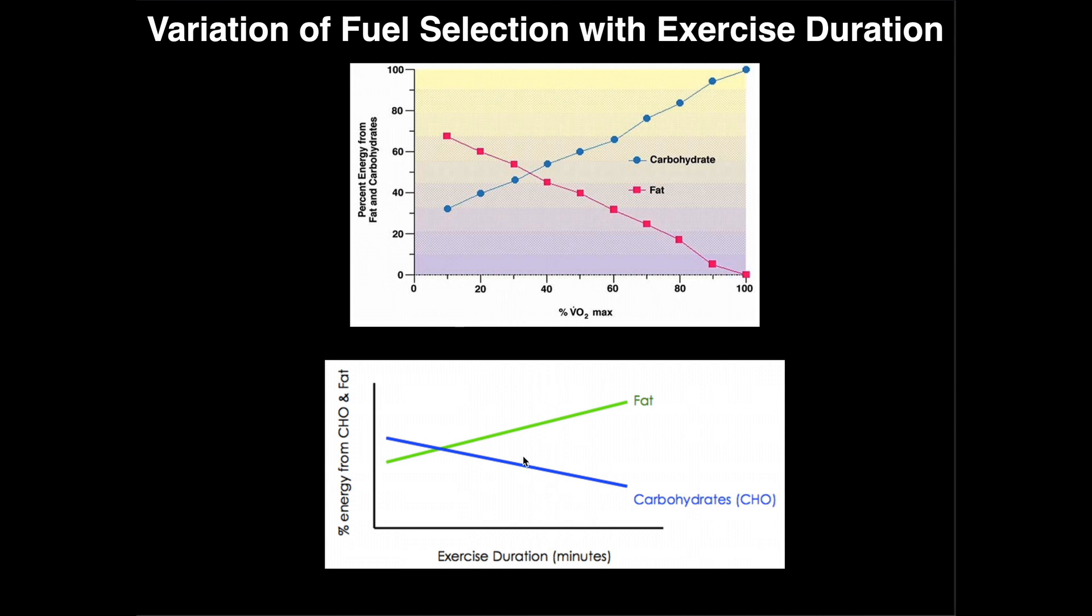When we look at this bottom graph, we're assuming that the individual is exercising at the same intensity. Maybe that intensity is 40% of VO2 max, maybe it's 60% of VO2 max, and they're not changing the intensity, but they're doing it for a long period of time, let's say two hours, maybe three hours if you're doing some kind of endurance training. So let's suppose we look at exercise duration where we're exercising at 50% of VO2 max, and that's roughly what this graph corresponds to.